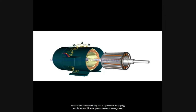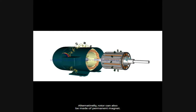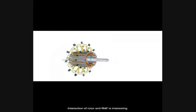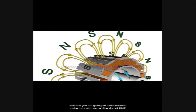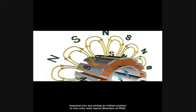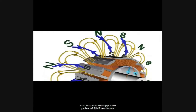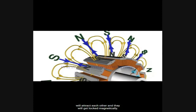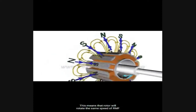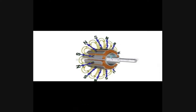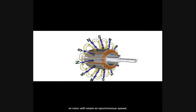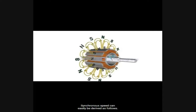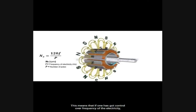The rotor is excited by a DC power supply so it acts like a permanent magnet; alternatively, the rotor can also be made of permanent magnets. If the rotor is given an initial rotation in the same direction as the RMF, the opposite poles attract each other and get locked magnetically, causing the rotor to rotate at synchronous speed.